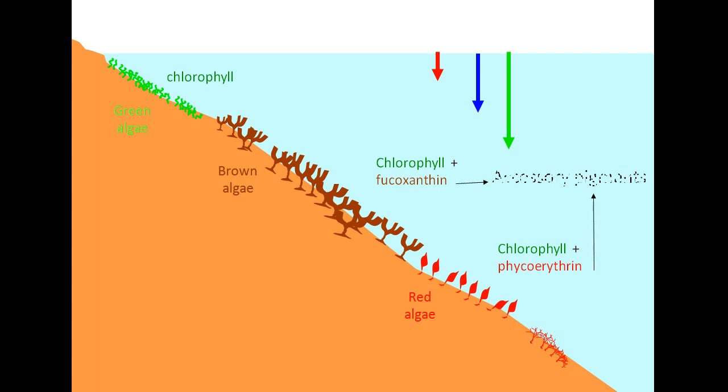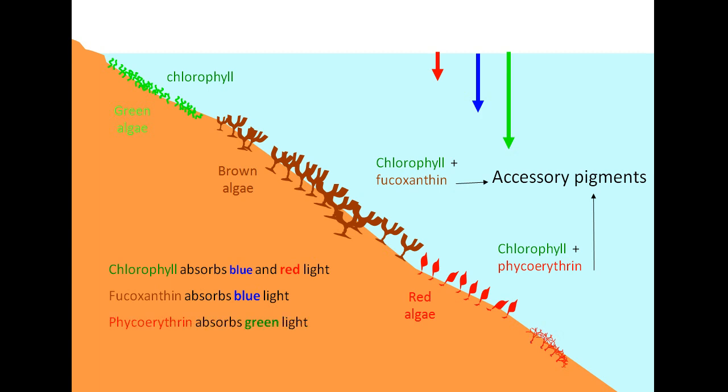Now, these extra pigments are called accessory pigments and their job is to harvest the light energy and pass it on to chlorophyll. Chlorophyll absorbs blue and red light strongly, fucoxanthin absorbs blue light, and phycoerythrin absorbs green light.